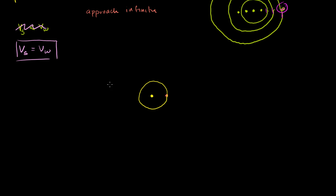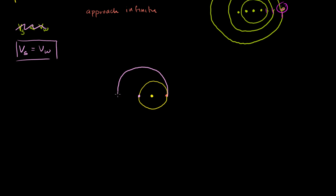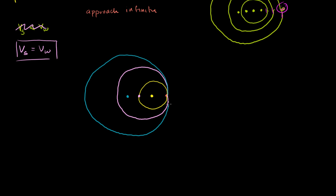Two periods ago the source was further back and released a pulse there. That pulse has traveled as far as the source has moved over two periods — so it too arrives at the current position. Three periods ago, same thing: the pulse released then has also caught up to the source's current location, because it travels radially outward at the same speed. Every pulse, no matter when it was released, arrives at the source's current location at the same time.